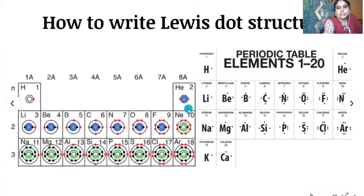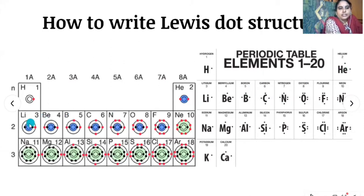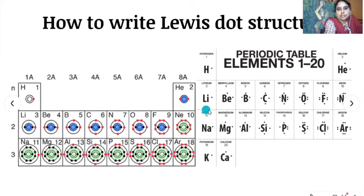For helium, atomic number is two, electronic configuration is 1s2. The outermost shell contains two electrons, so we write two dots on helium. For lithium, atomic number is three, electronic configuration is 1s2, 2s1. The inner core shell contains two electrons and the outermost shell contains only one electron, so one dot on lithium.